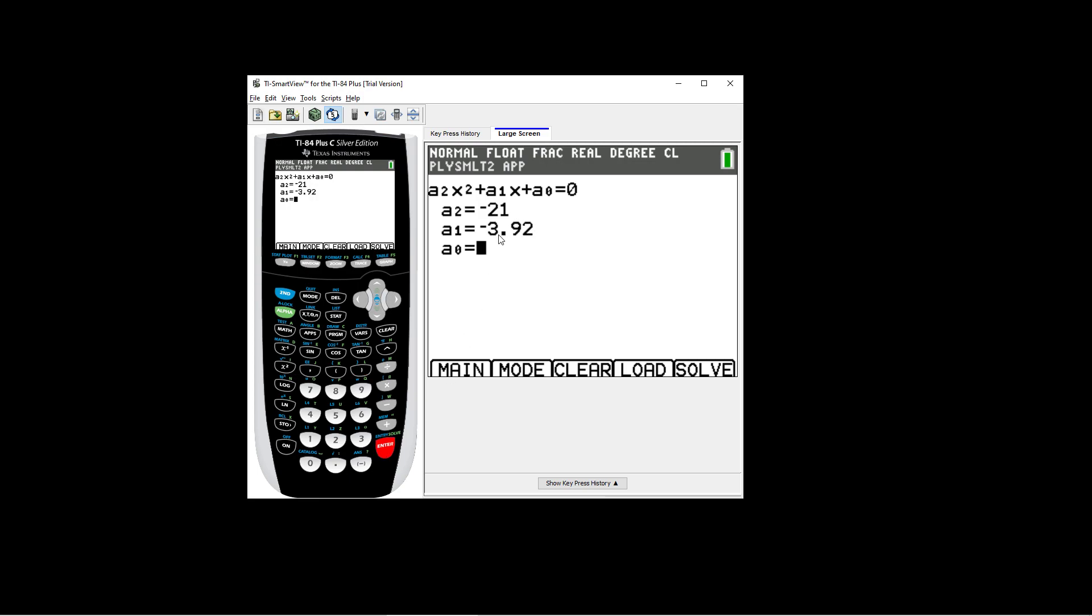You should be getting negative 3.92. The last one is A0, which represents capital C. Let's go ahead and punch that one in next.